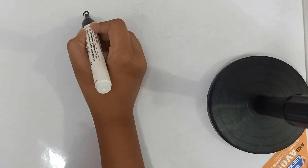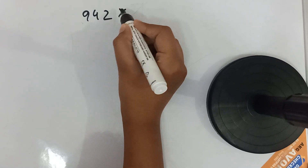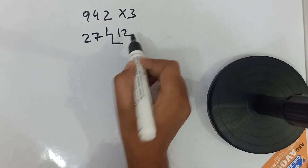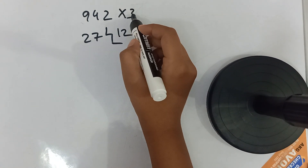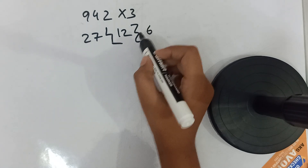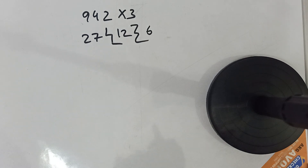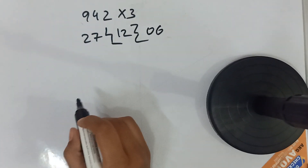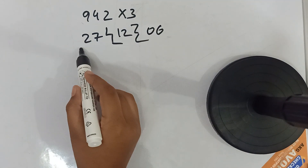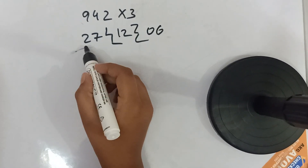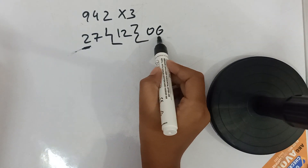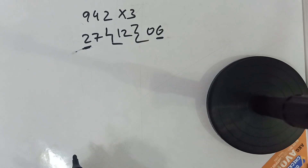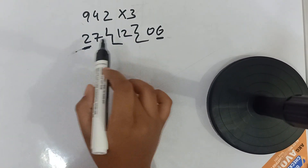Let's solve one more: 942 multiplied by 3. So 3 nines are 27, step, 3 fours are 12, step, 3 twos are 6. Note: it is mandatory to put a 0 before the 6 when the product is a single digit. We don't use the first digits — 2 from 27 and 6 from 06 — because those are the outermost digits.